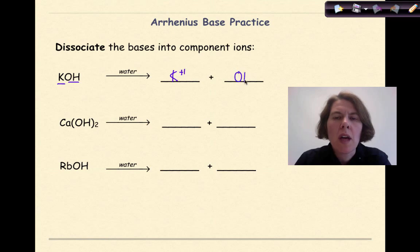Ca is coming from group 2. So my positive ion would be Ca plus 2. And then I have 2 hydroxide ions. So this would be 2 OH minus 1 to keep it electrically neutral.